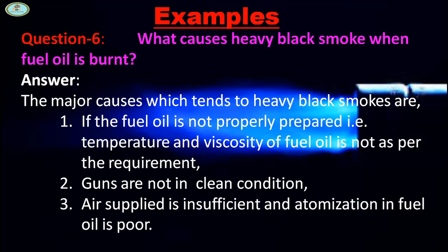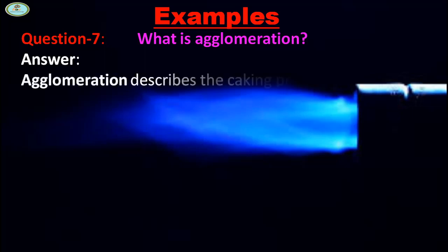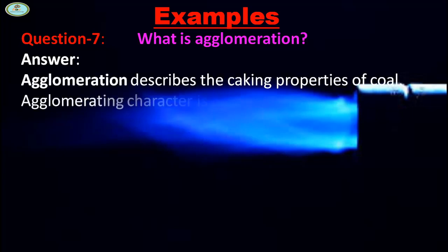Guns are not in clean condition, air supplied is insufficient, and atomization of fuel is poor. What is agglomeration? Agglomeration describes the caking properties of coal.